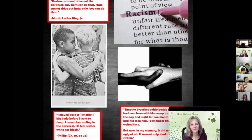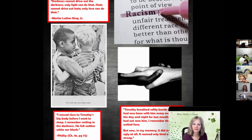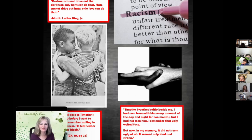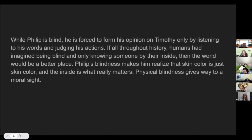So in the top left corner it says, darkness cannot drive out the darkness — only light can do that. Hate cannot drive out hate — only love can do that. Martin Luther King Jr. said that. As I moved close to Timothy's big body before I went to sleep, I remember smiling in the darkness. He felt neither black nor white. And then in the bottom right corner it says: Timothy breathes softly beside me. I had now been with him every moment of the days and nights for two months. While I had not seen him, I remember that ugly, welted face, but now in my memory it did not seem ugly at all — it seemed only kind and strong. While Philip is blind, he is forced to form his opinion on Timothy only by listening to his words and judging his actions. Physical blindness gives way to a moral sight.